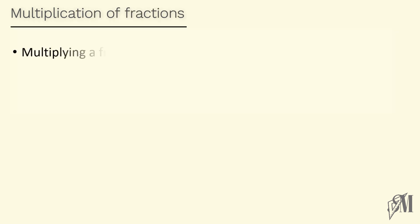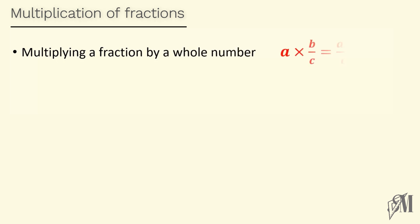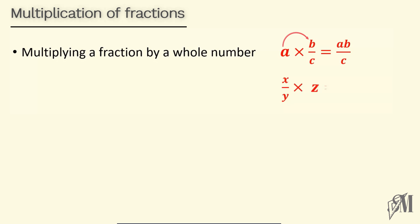Now let's see how to multiply fractions. First, fractions multiplied by a whole number: if a is a whole number and b over c is a fraction, we multiply the whole number by the numerator — that is a into b over c. The same applies when a fraction is multiplied by a whole number: if x over y is a fraction and z is a whole number, we multiply x by z and don't multiply y, giving us x·z over y.